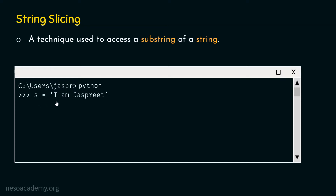Let's type s equal to 'I am just Preet'. This name s is given to the string 'I am just Preet', and it is perfectly allowed in Python. If we hit enter, we will not get any error message. Now, let's say that we are interested in accessing the substring 'I am just'. For that, we need to type this command: s opening square bracket 0 colon 8 closing square bracket. This is the syntax we need to follow in order to access this substring 'I am just'.